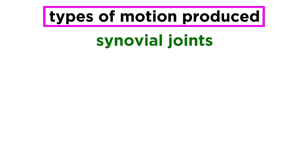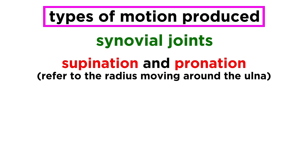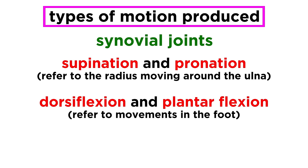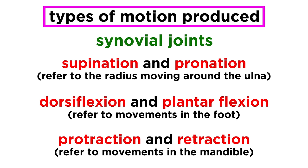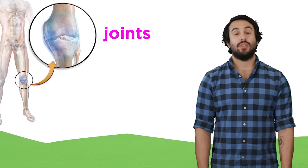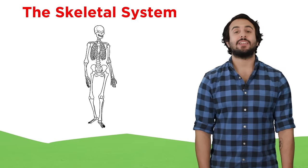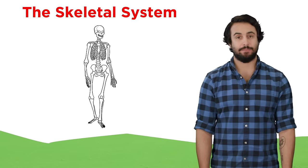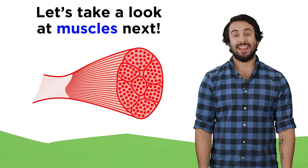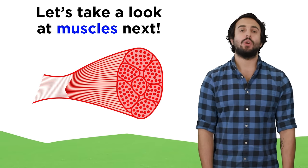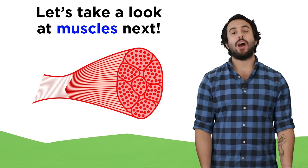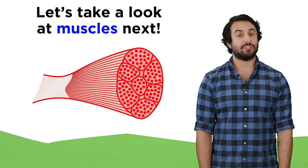Beyond this are some special movements that don't fit into these categories, like supination and pronation, which has to do with the radius moving around the ulna in the forearm; dorsiflexion and plantarflexion in the foot; as well as protraction and retraction of the mandible, among others. There is much more we could say about each individual joint, but that completes our introduction to the skeletal system. Now we are ready to learn about the muscles attached to these bones and joints, which will give us a much better understanding of how the human body works.